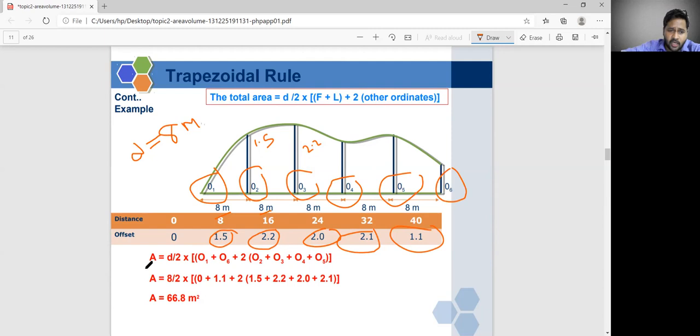Based on this formula, A, if you want to find A equal to D by 2 into O_1 plus O_6, your ordinates, we have one plus O_2 plus O_3 plus O_4 and O_5. We know what is eight.